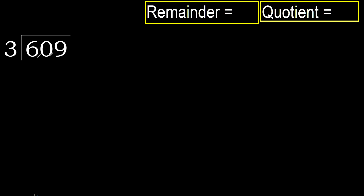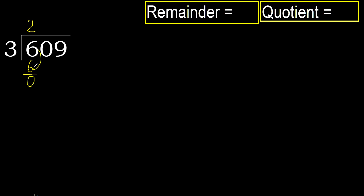609 divided by 3. 6 is not less, therefore with 6, 3 — multiply by which number is nearest to 6 but not greater. 3 multiplied by 3 is 9, it's greater. Multiply by 2: 6. It's not greater, subtract. 6 minus 6 is 0.